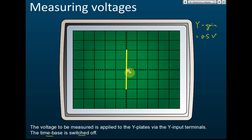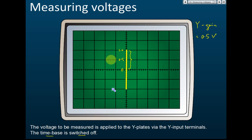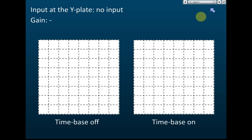The peak voltage is measured from the center. With a Y gain of 0.5 volts per division, one division up from center is 0.5V and two divisions is 1.0V. So the peak voltage is 1.0 volts. That's how we measure voltage from the display of a cathode ray oscilloscope.